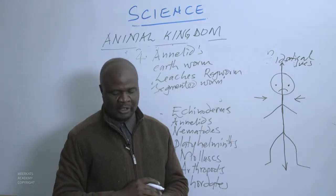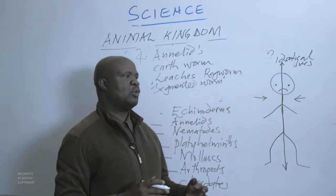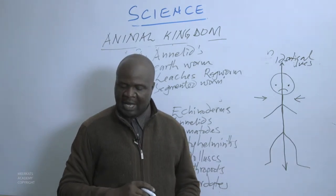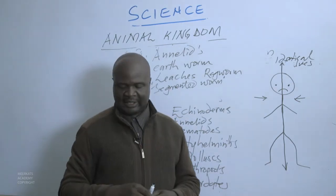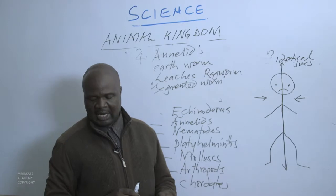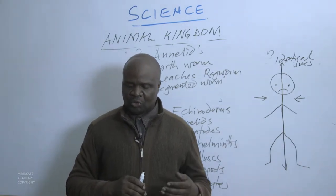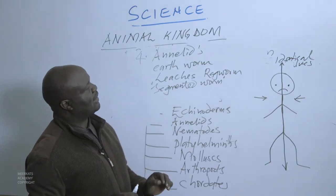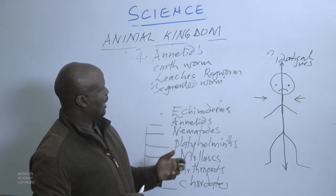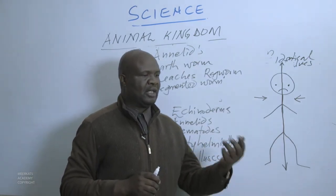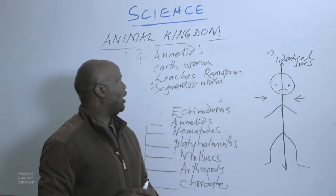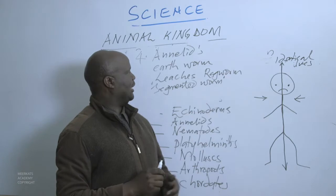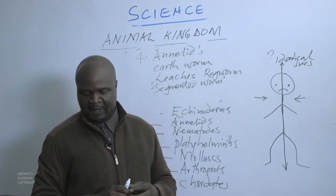Annelids are found in water and damp places on land. In wet soils, you can easily find these Annelids. Annelids have two body openings — one in front where food enters and another one at the back where waste leaves. Unlike Cnidarians which have only one opening for both ingesting food and ejecting waste, Annelids have two separate openings.